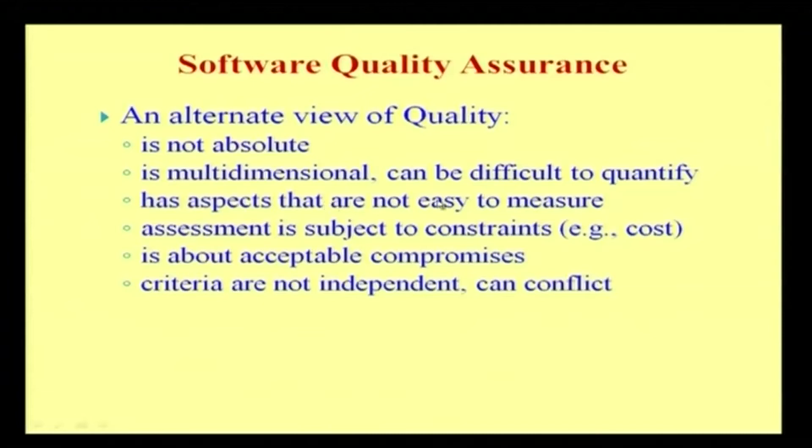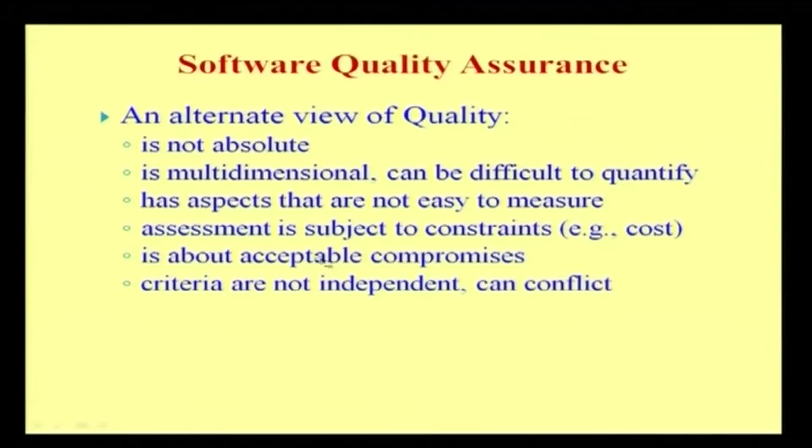Quality has aspects that are not easy to measure. Quality is assessed and is subject to constraints. For example, if a project needs to be clearly defined, it is in terms of cost — cost can be one quality measure we might project. Time can be another quality measure. When a product needs to be developed, we take up certain aspects such as schedule, time, budget, or cost. An appropriate amount of time to complete the project is in turn dependent on the quality of the product.